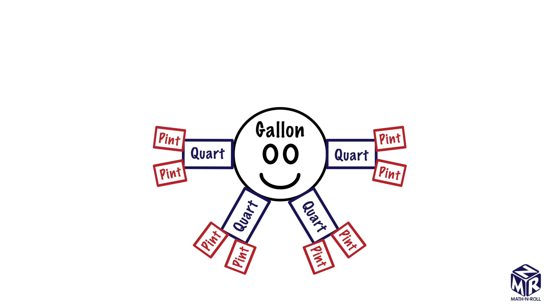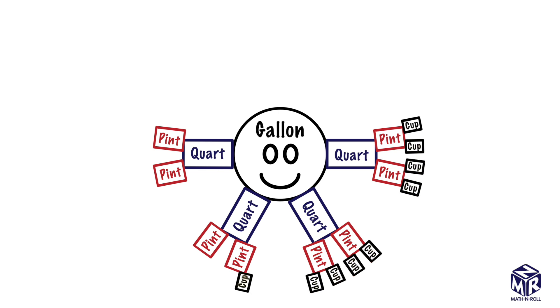Each pint is made up of 2 cups, so we draw 2 cups to each pint. Now our gallon man is complete.